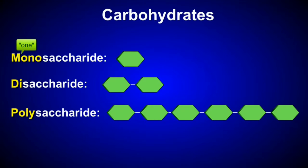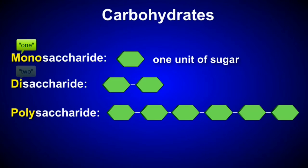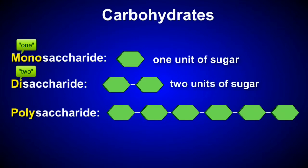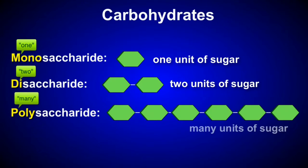Mono means 1, so a monosaccharide is a carbohydrate made of 1 unit of sugar. The prefix di means 2, so a disaccharide is a carbohydrate made of 2 units of sugar. And poly means many, so a polysaccharide is made of many sugar units bonded together.